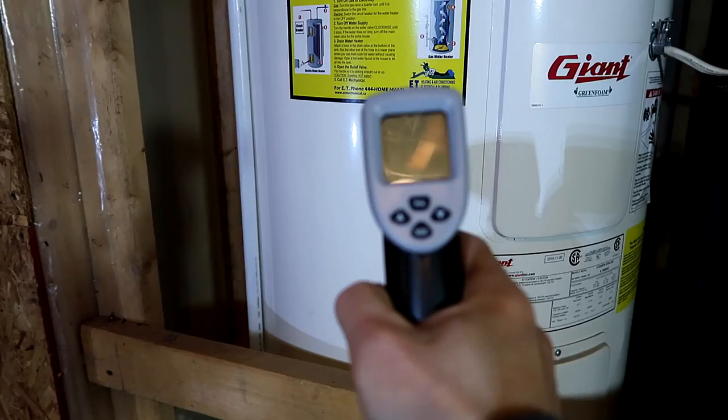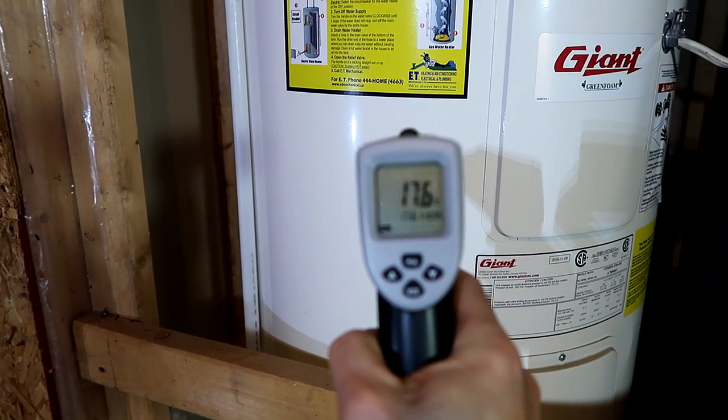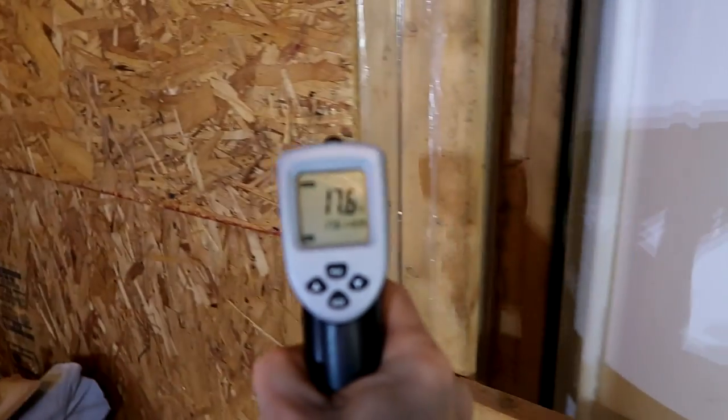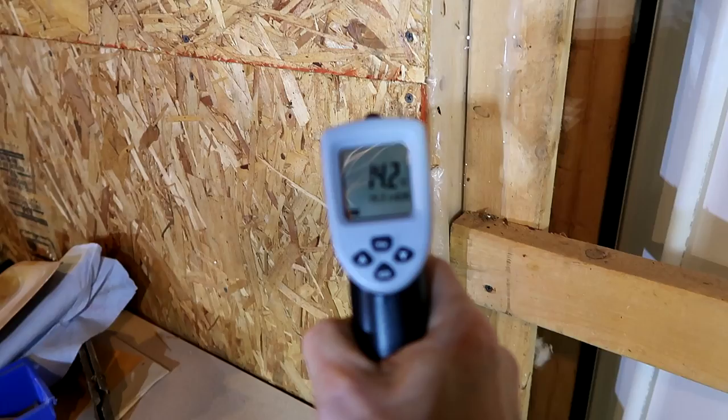How much heat does this tank really lose? Let's take some measurements of the tank. 17.6 degrees, and ambient off the walls, 14.2. Let's take a few more readings.